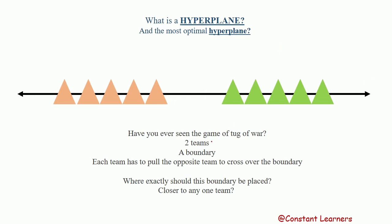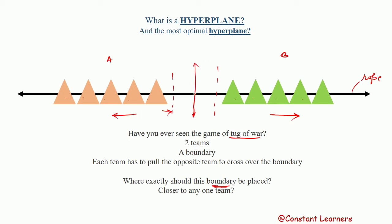Let's understand with the game of tug of war. There are two teams — team A and team B — standing on either side of a rope, and both teams pull the rope towards their side. What decides the winning is a boundary. But where should this boundary be placed? It cannot be placed closer to any one team — that would be cheating. It should be placed exactly in the center, so that it is a fair play.